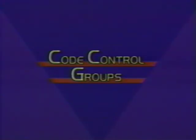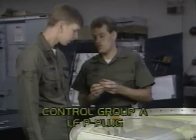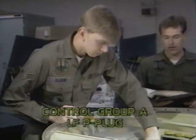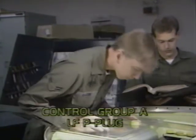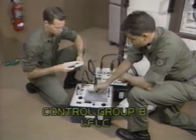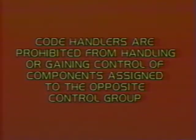Code control groups. All code components which require split handling controls and all code handlers are assigned to either code control group A or B. Each split handling designated component is handled by a team of at least two code handlers of the same code control group as the components they control. Only code handlers assigned to a particular control group are authorized to handle components assigned to their control group. They are prohibited from handling or gaining control of components assigned to the opposite control group.